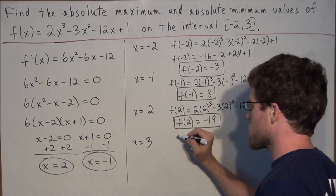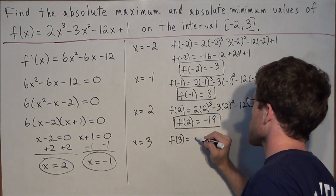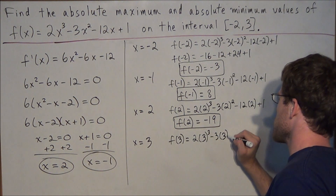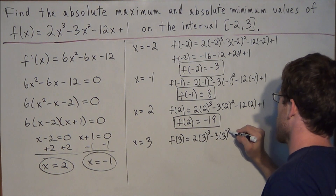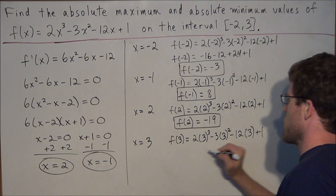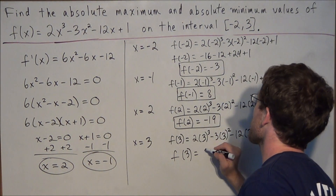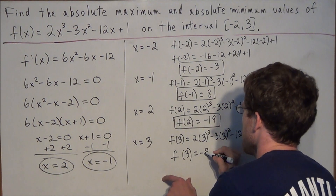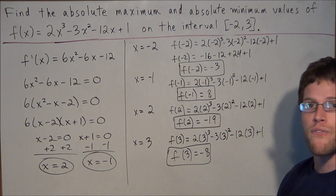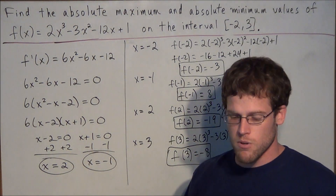We have one more value to evaluate. Plugging in x = 3: f(3) = 2(3)³ − 3(3)² − 12(3) + 1. When we simplify, f(3) = −8. Now the last step: once we have all these function values, we find the greatest value and the smallest value — those are our absolute maximum and minimum.